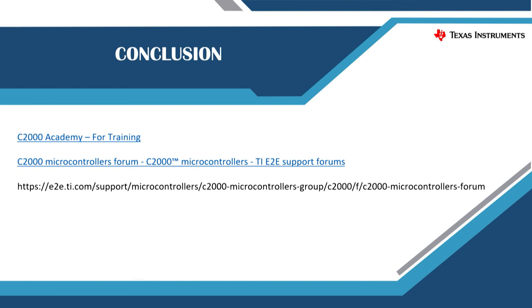As part of this course, we learned about how to get started on C2000, what hardware and software resources are available, how to use the reference designs, and how to do a digital power design. You can also go to C2000 Academy for understanding many of our peripherals, software, and available trainings. For support, you can go to the E2E forum for help and support on the C2000 microcontroller. Thank you.